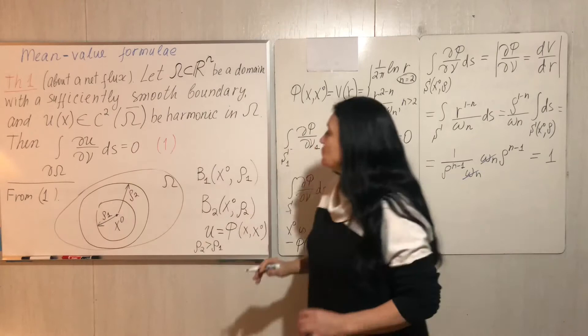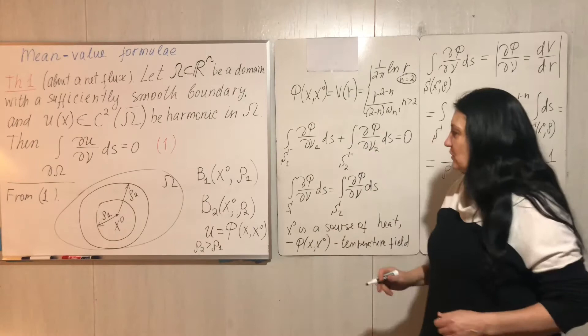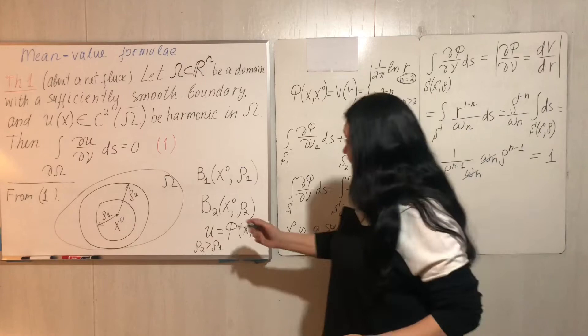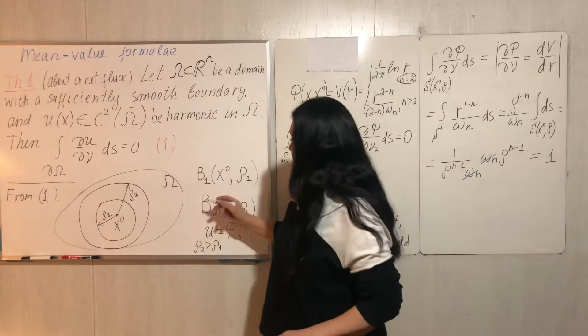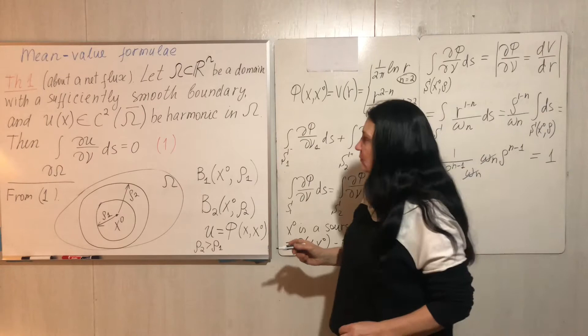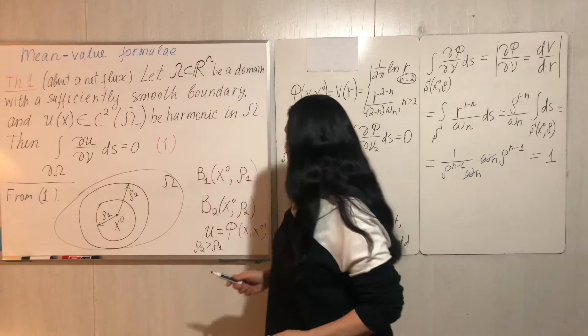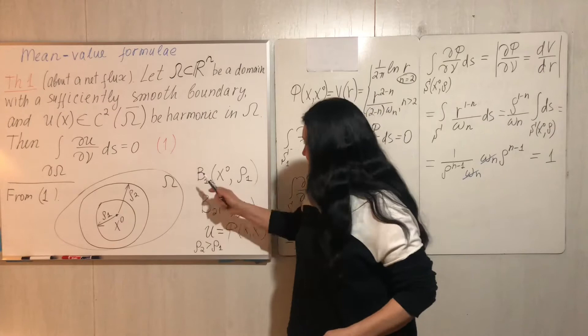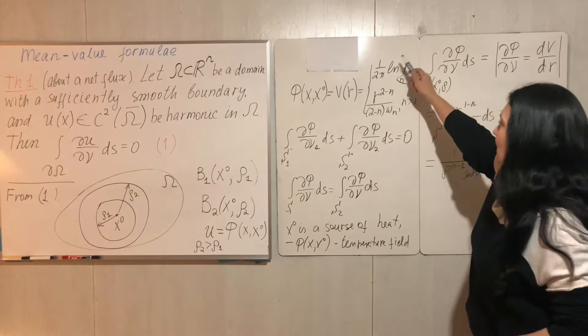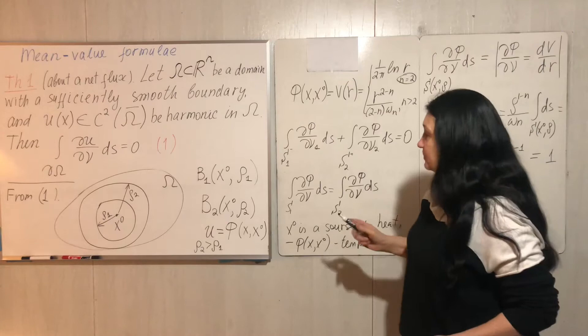I'm talking about an n-dimensional case, but I will make this illustration in a two-dimensional case since it's easier to draw a picture. So we have two balls, ball B1 and ball B2. Let's take u as our fundamental solution phi — here I just remind you the formula.